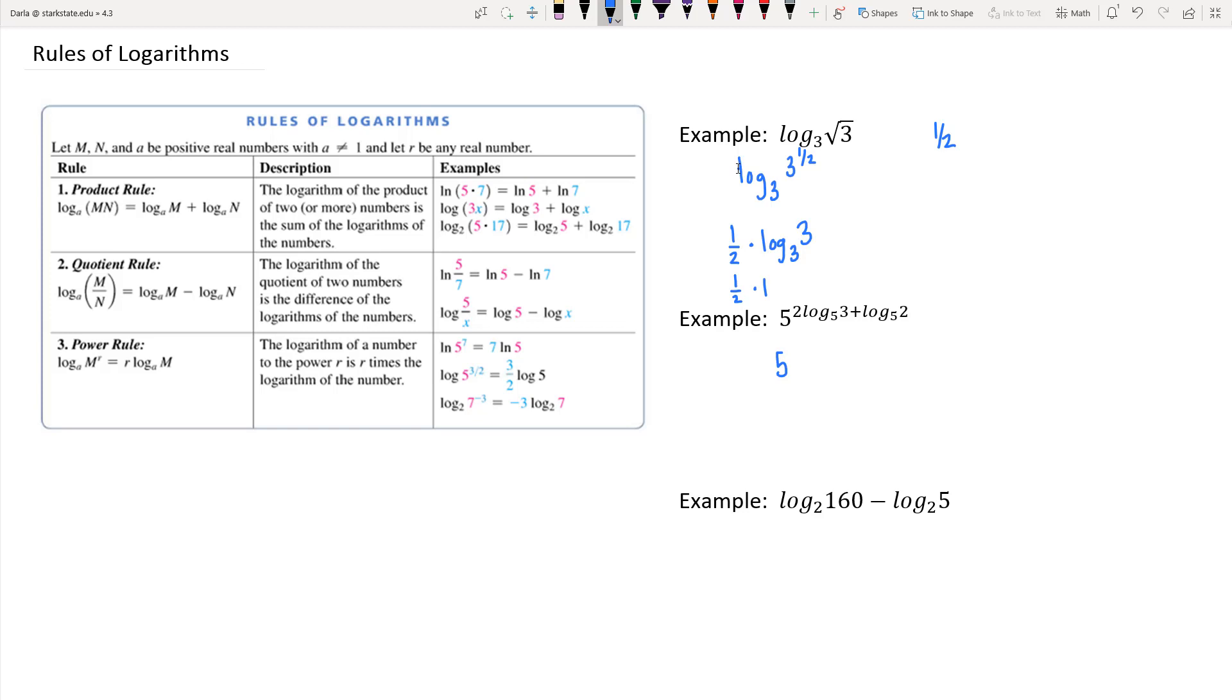Well, we could use the power rule to pull that two up in the exponent. So this would be log base five of three to the second power, and then plus log base five of two.